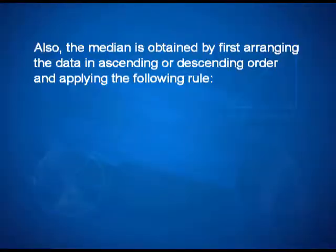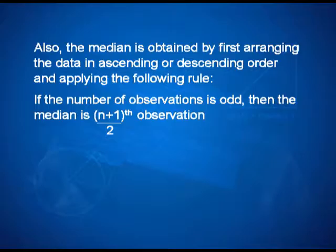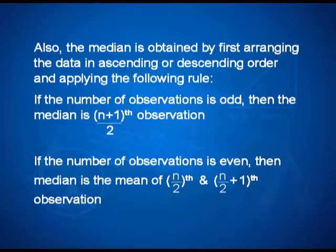The median is obtained by first arranging the data in ascending or descending order and applying the following rule. If the number of observations is odd, then the median is the ((n+1)/2)th observation. If the number of observations is even, then the median is the mean of the (n/2)th and the (n/2 + 1)th observations.